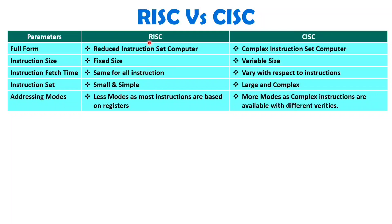Addressing modes will be fewer with RISC architecture, because most of the instructions are based on registers only, so fewer addressing modes are needed. With CISC, many addressing modes are available because CISC architecture has instructions based on registers as well as memory. When you operate with varieties of modes with respect to memory, you get many more modes. With RISC, we only have load and store mode with respect to memory, so fewer addressing modes exist.